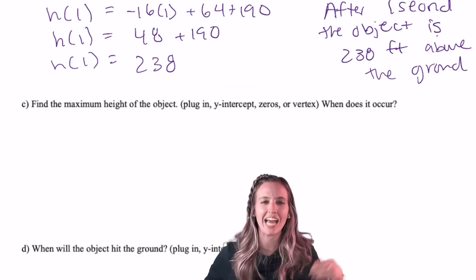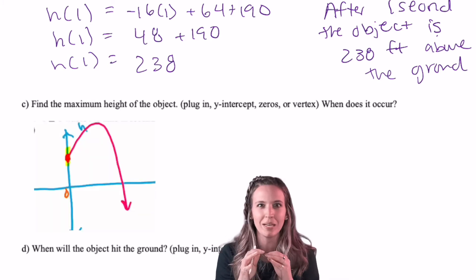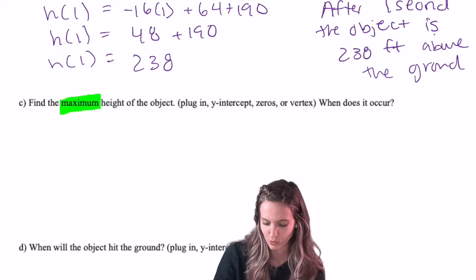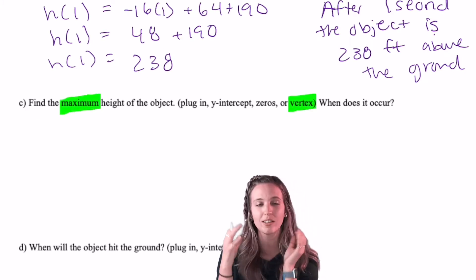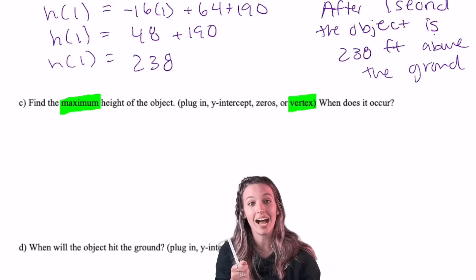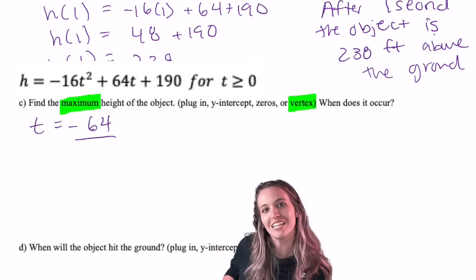Find the maximum height of the object, and when does that occur? Well, Mrs. Peer talked about this maximum. What does that make us think of? Vertex, right? So this maximum is kind of a buzzword for looking for the vertex. So I want to find the vertex. Now it's going to give me the max height, and it'll give me the time that that occurs. Vertex from standard form, t equals negative b divided by 2a.